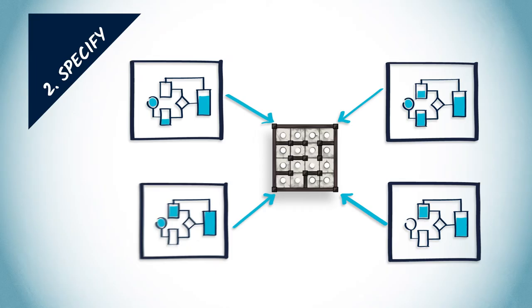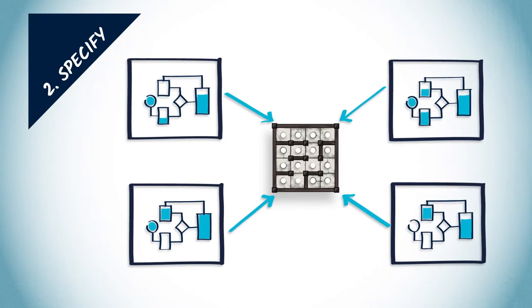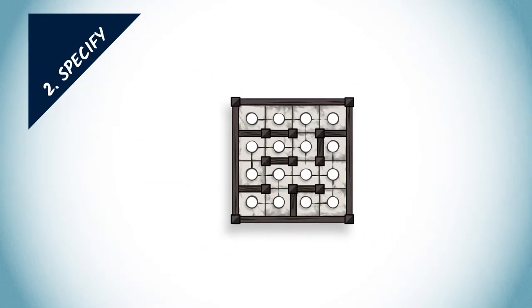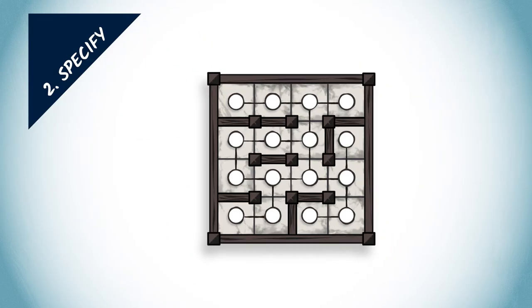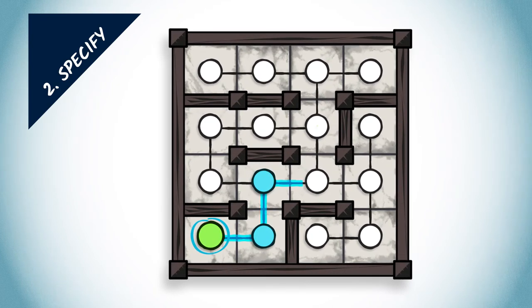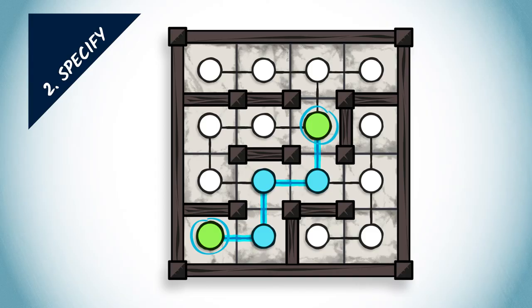Once a problem has been correctly formalized, it's time to specify a solution. To specify means to identify algorithms or methods that are well suited to solve the formalized problem. For example, in this MOOC, the AI that you will implement will have to move around in the maze. Therefore, we will discuss methods to find the shortest path in a graph, which can be used to identify a solution.